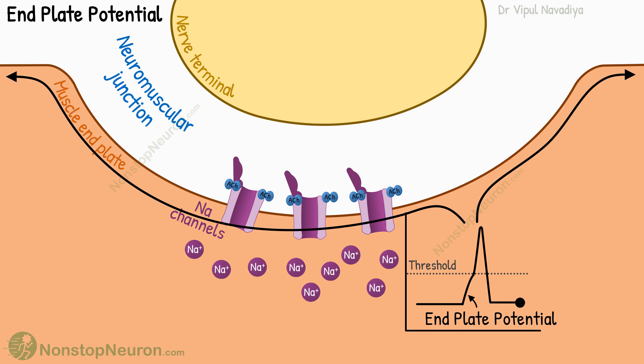So this was endplate potential. In summary, endplate potential is a local depolarization of the muscle endplate at the neuromuscular junction. It may or may not produce action potential.